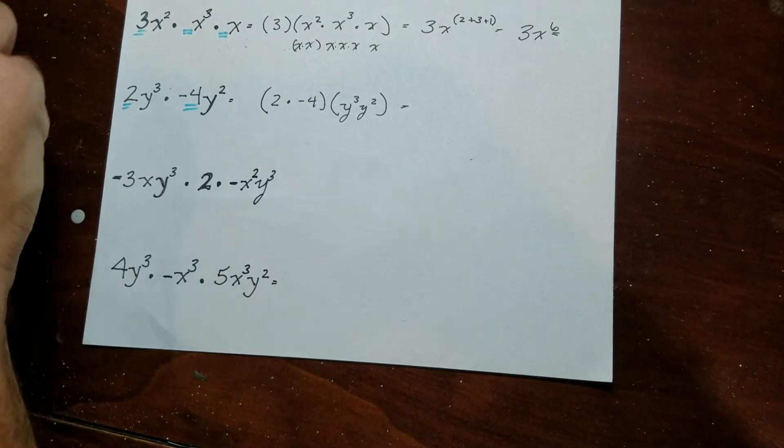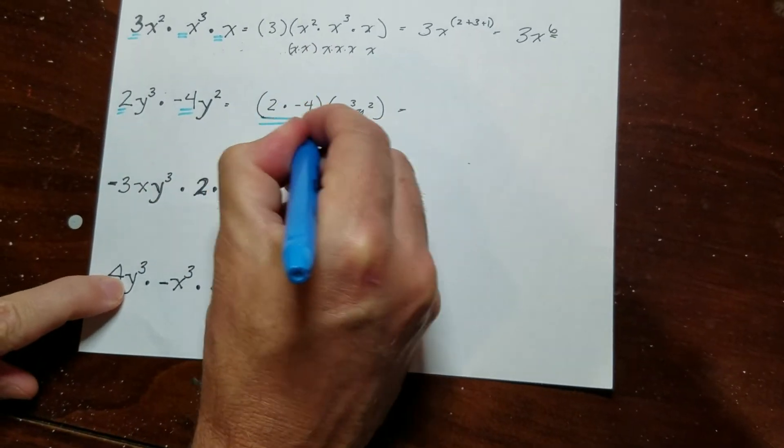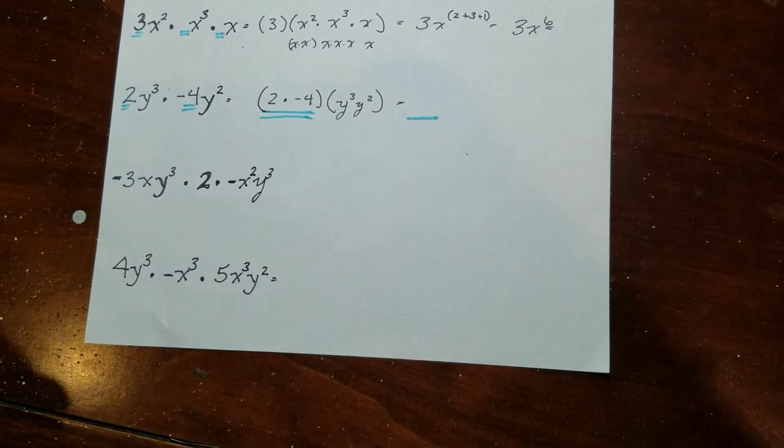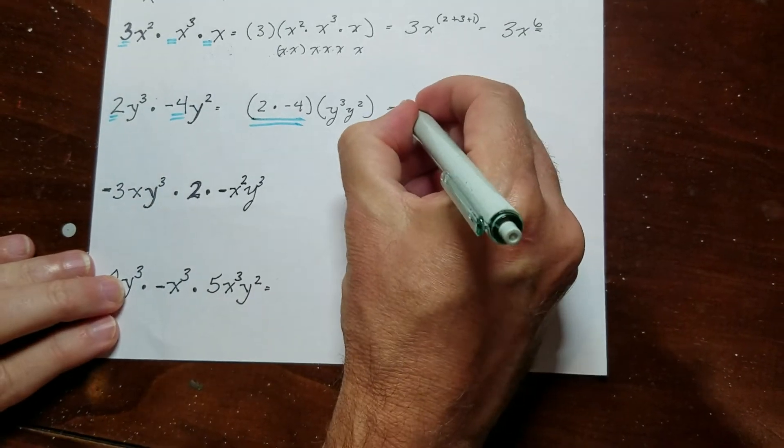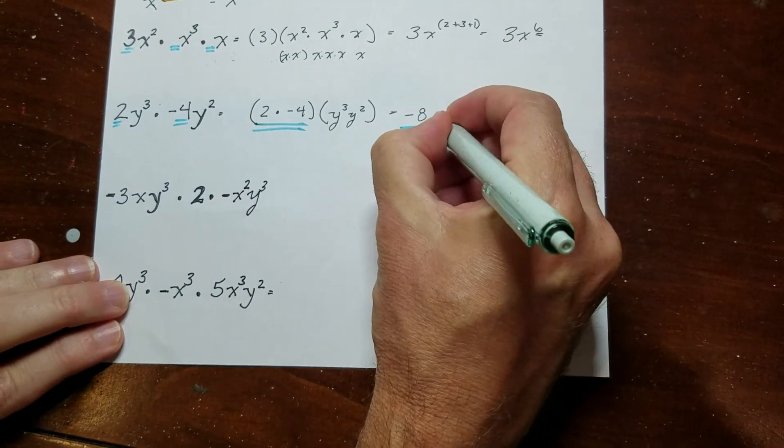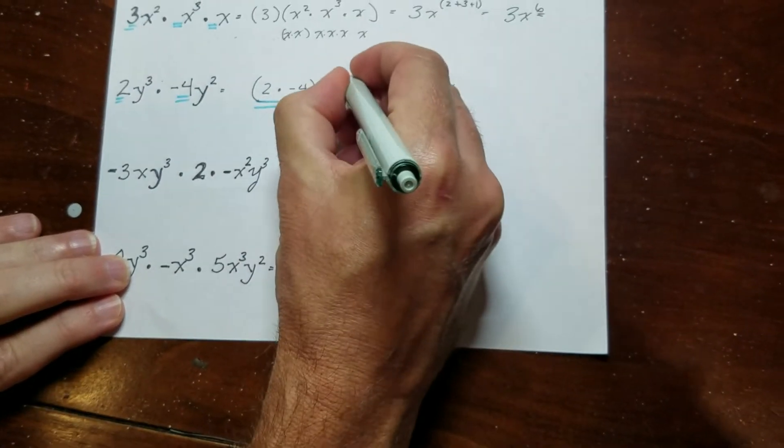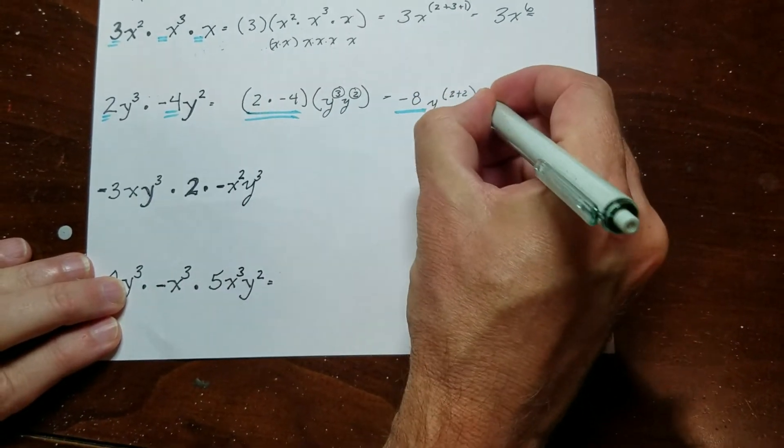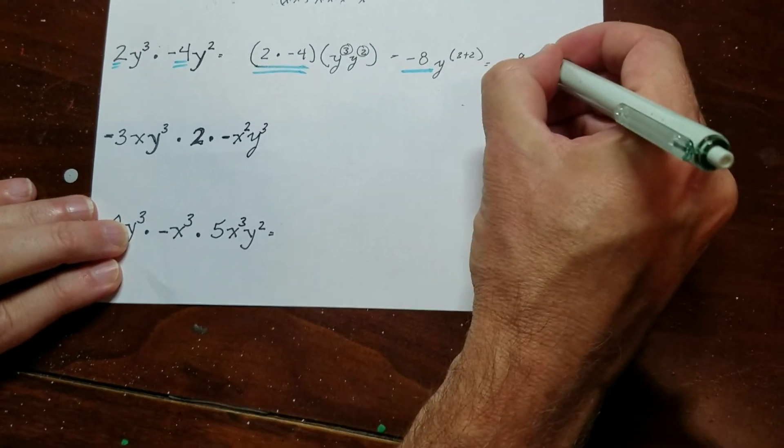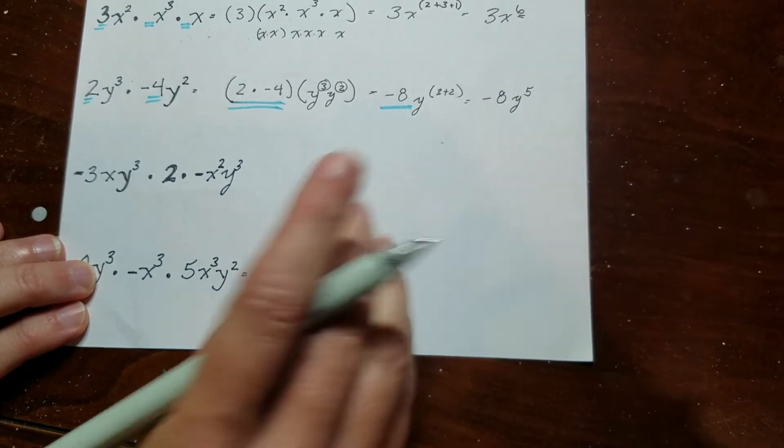And so this part right here, 2 times negative 4 is negative 8. And then I've got y to the 3 plus 2. So that's negative 8y to the 5th power.